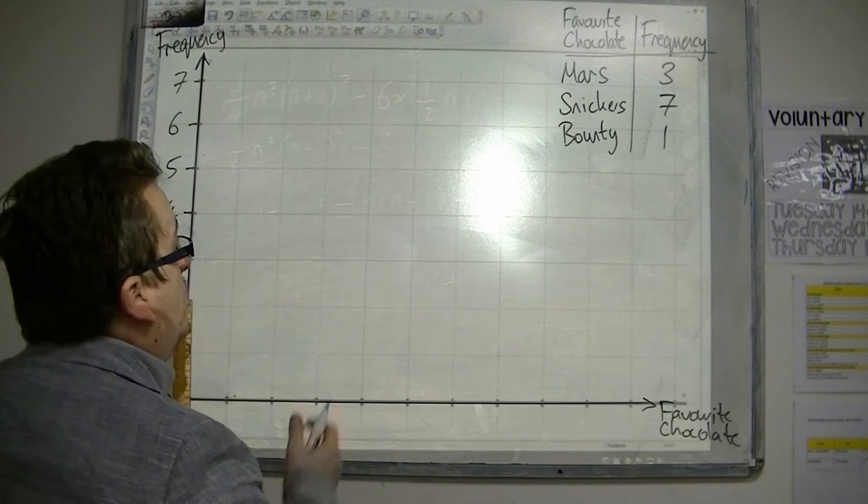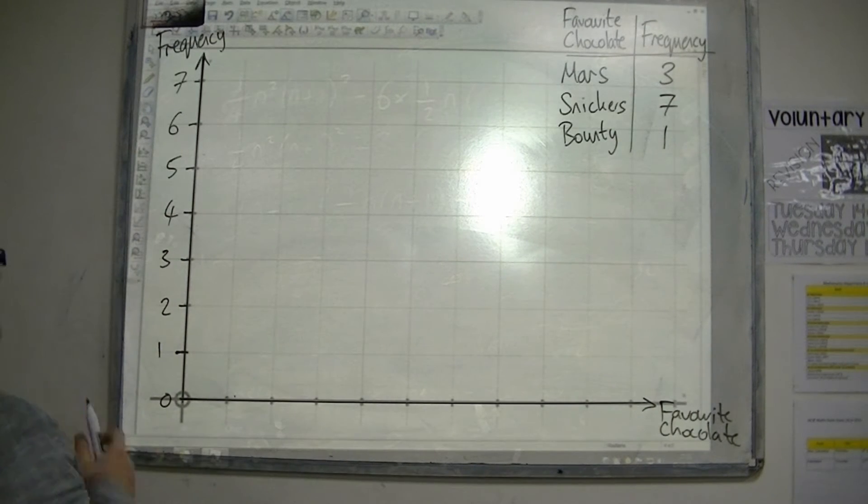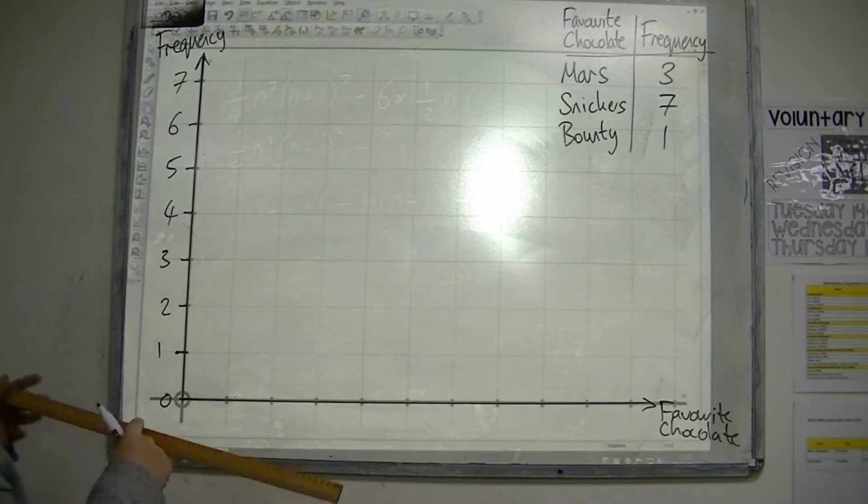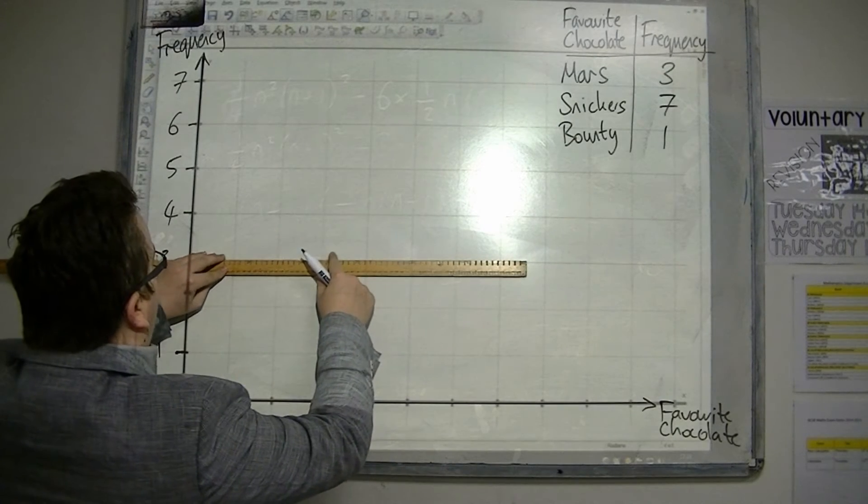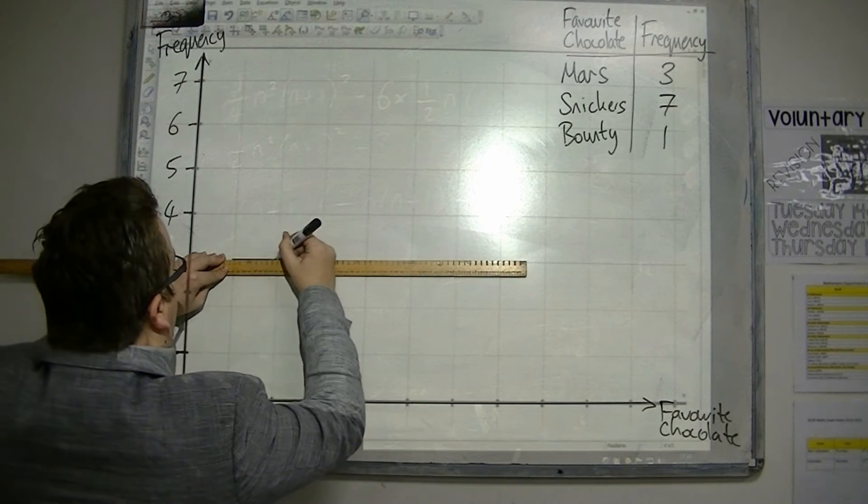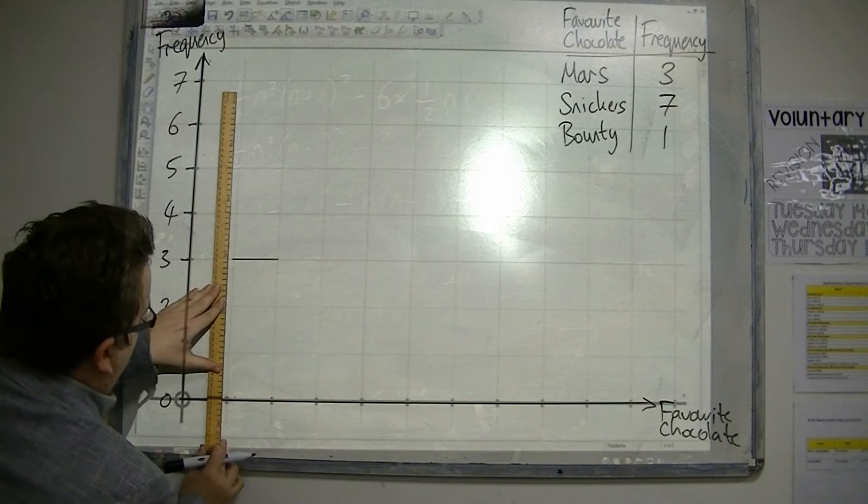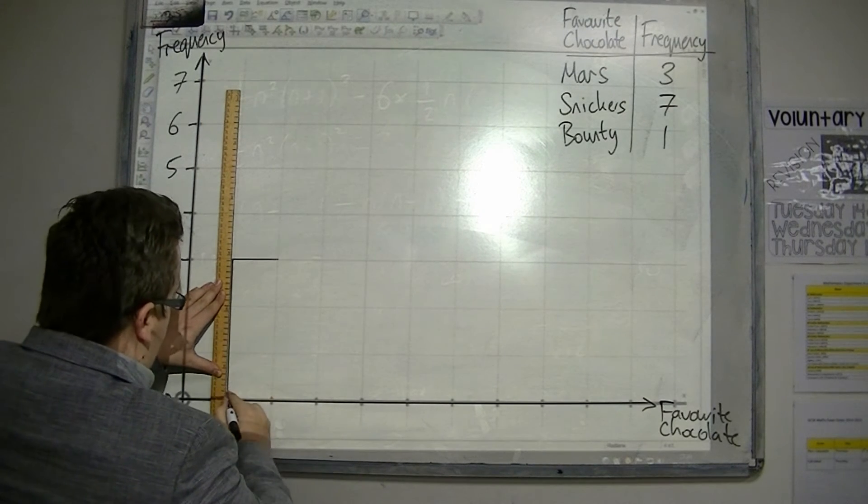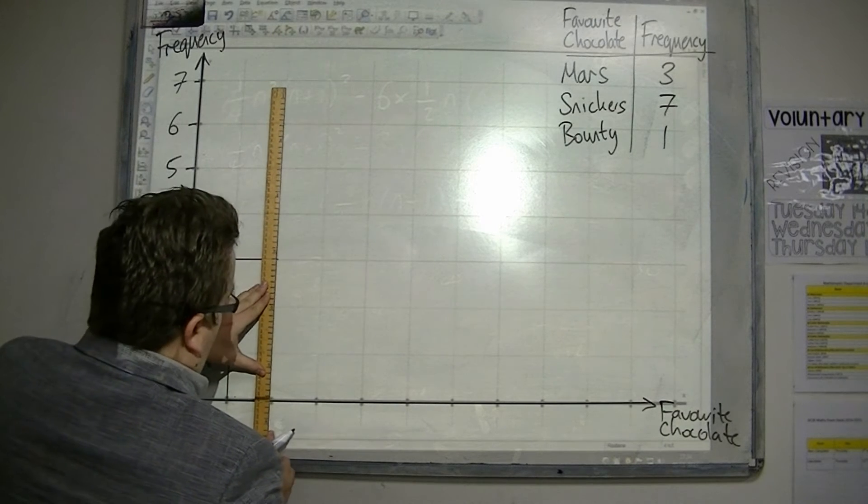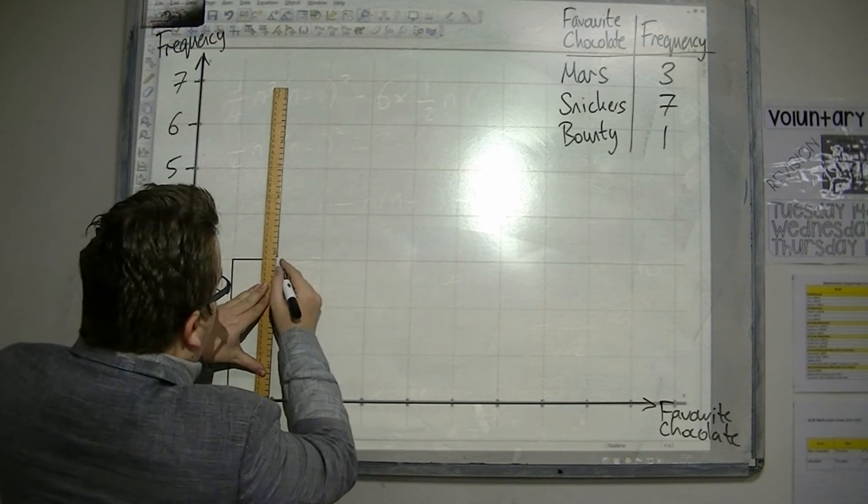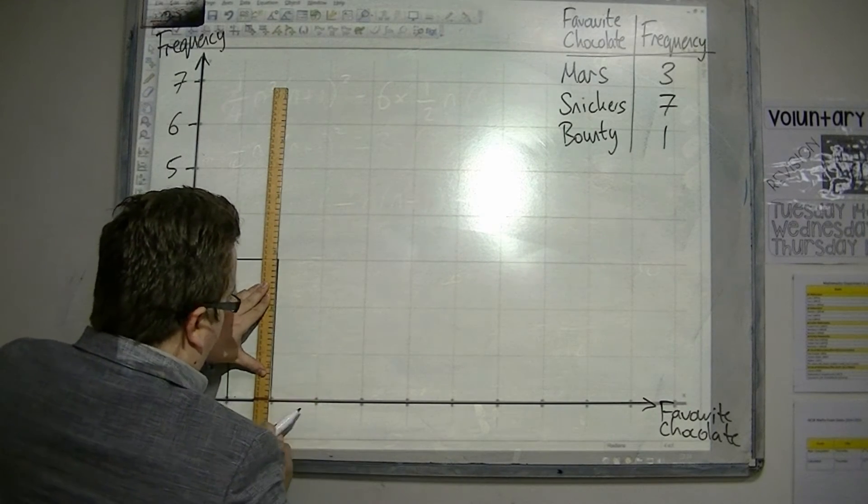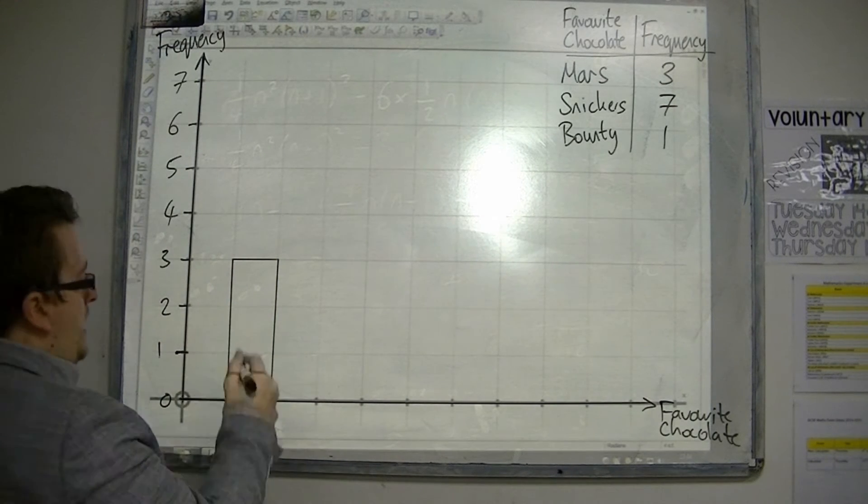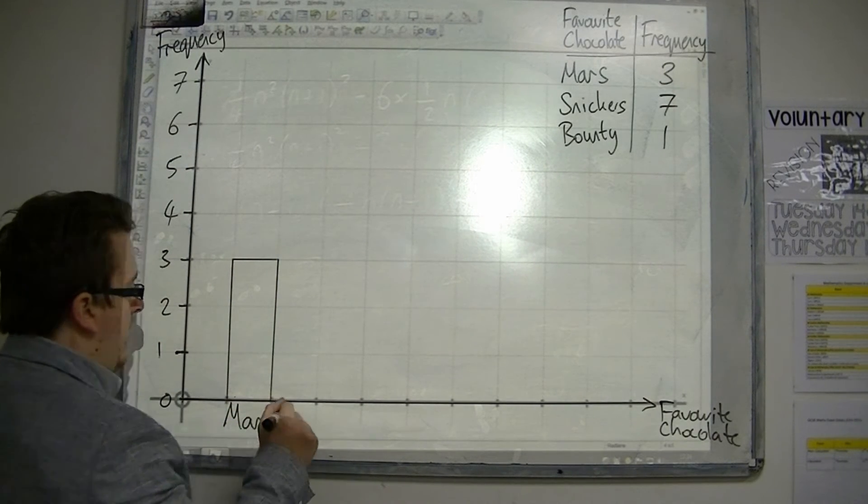So, we are going to start with Mars. That goes up to three. Now, I am going to leave a gap between the vertical axis and my first bar. This isn't always particularly necessary, but it does separate it out and makes it look a little bit neater. So, here is my Mars column.